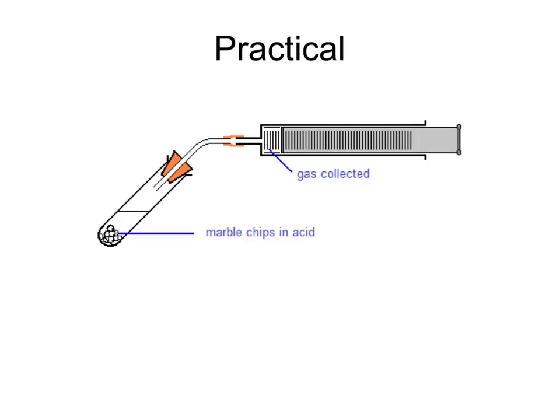If you were looking to investigate the rate of reaction and the effect temperature has on this, you'd use a setup like this. In here we have solid marble chips which are reacting with an acid, probably hydrochloric acid, and when they react they make carbon dioxide gas which flows out of the tube and along the delivery tube and into the gas syringe where it collects.